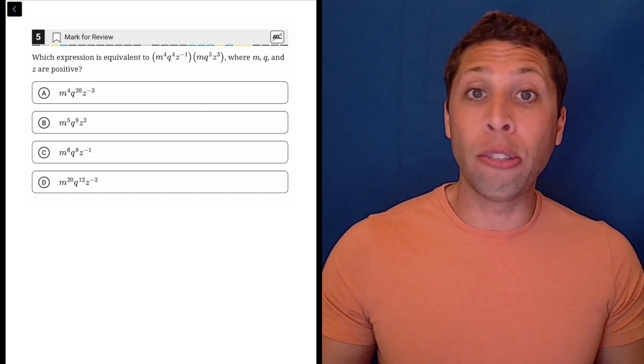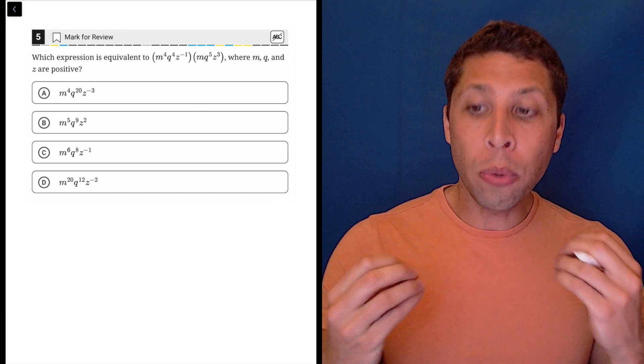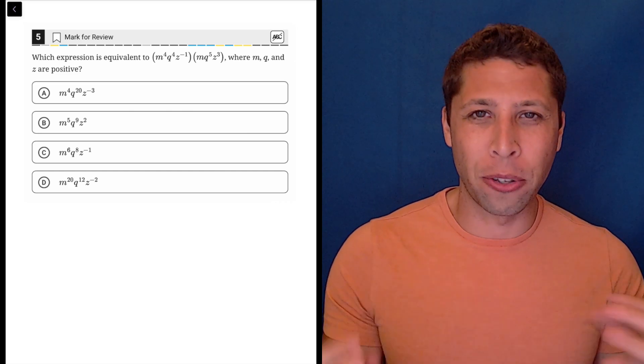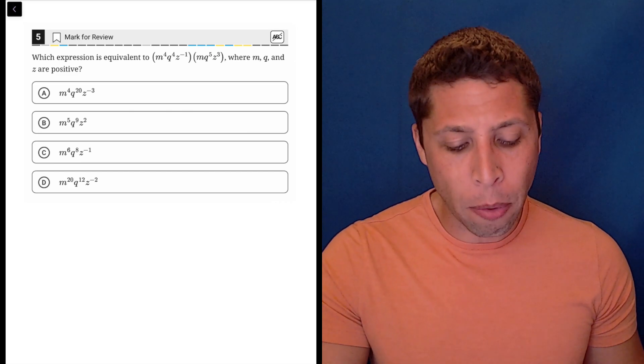Basically, what happens when we multiply two numbers or two values that have exponents? What happens to them? How do we combine them when we multiply them by each other?